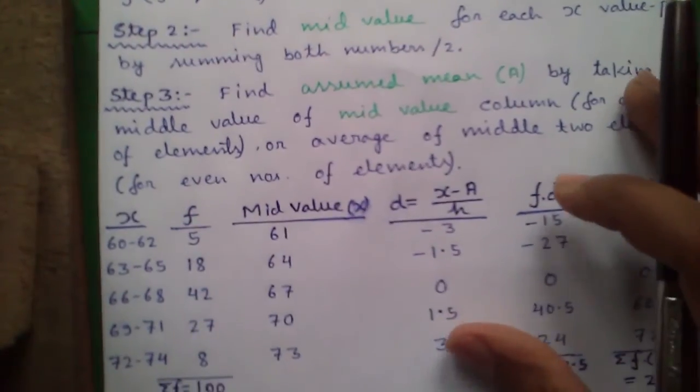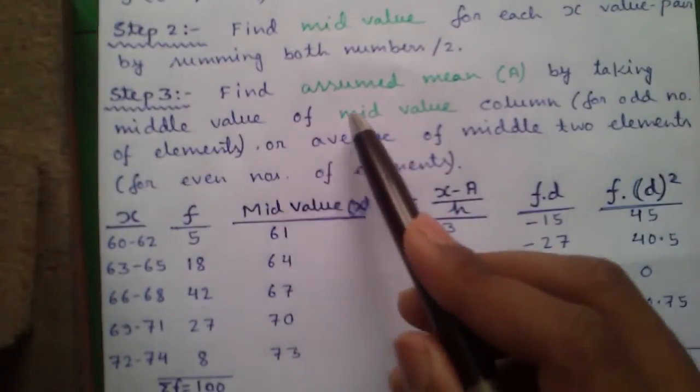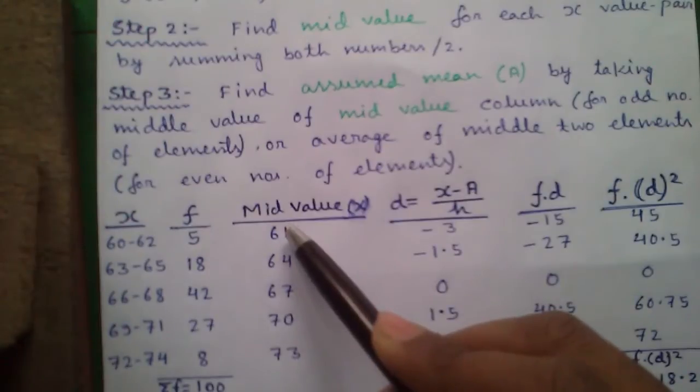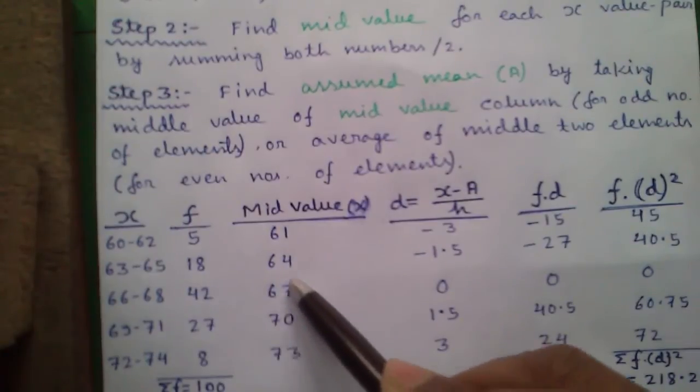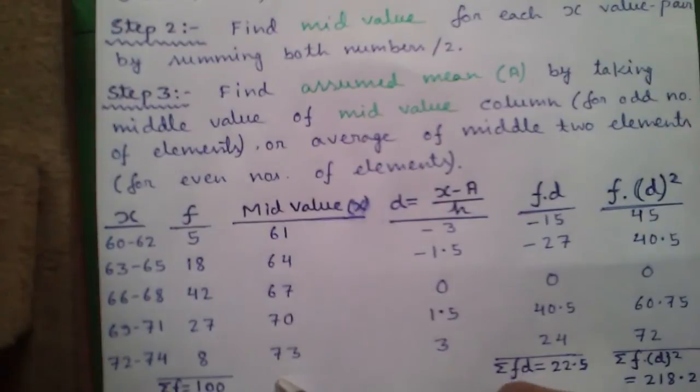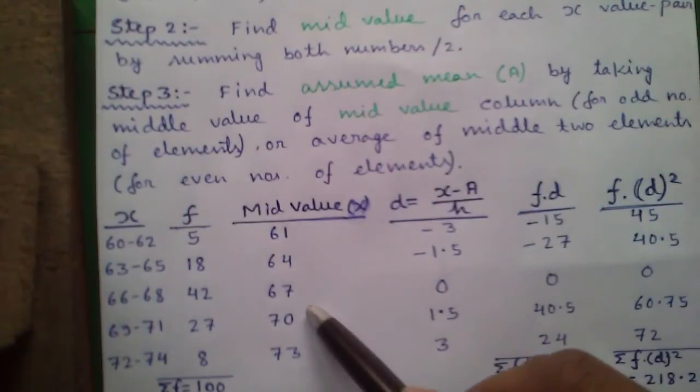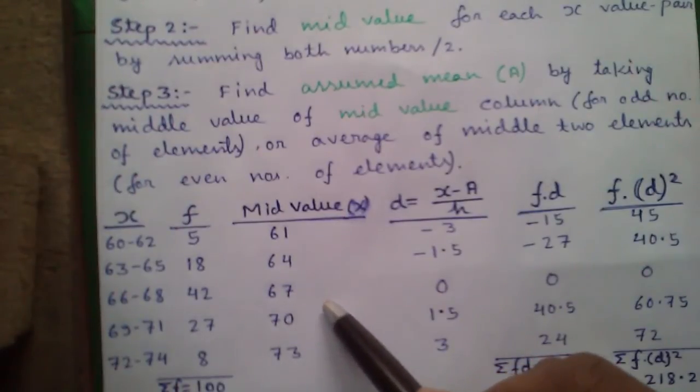Step 3: Find assumed mean or a by taking middle value of mid value column for odd numbers of elements. Here there are 5 elements, so we will take the middle value as our assumed mean. In case of even number of elements, say if there is another element of 80, then we would have taken the average of middle 2 elements, in that case our a becomes 68.5.